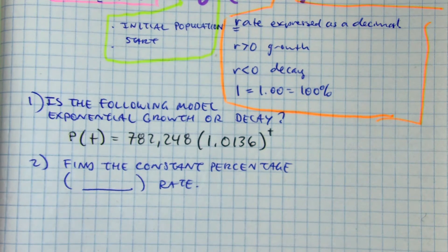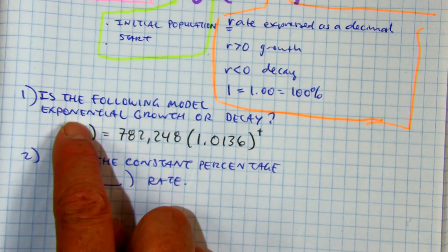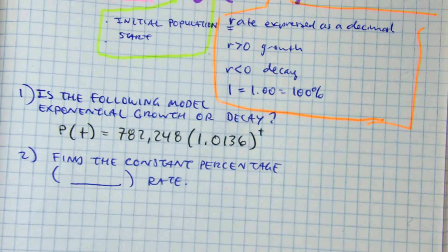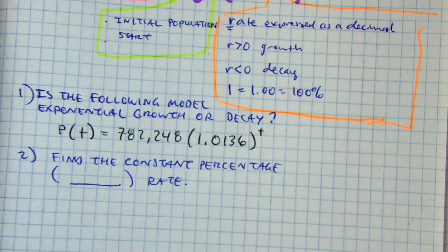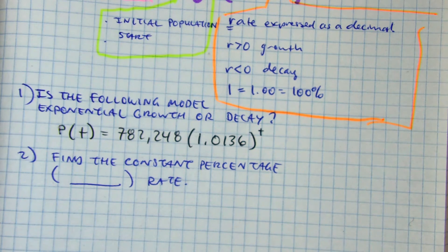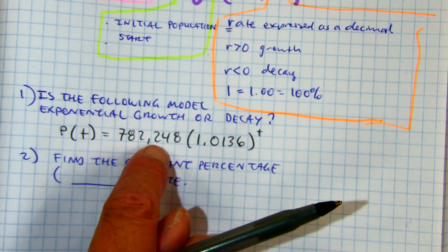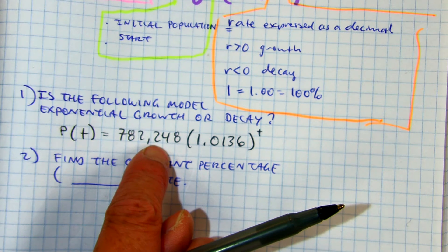Is the following model exponential growth or decay? Put your finger on the initial population, on the starting point. There's our a value, or the p sub zero.